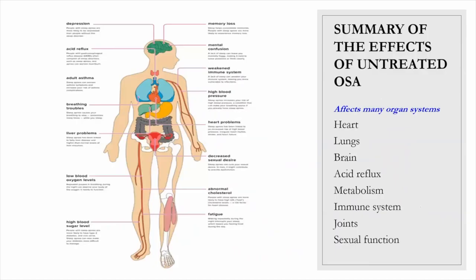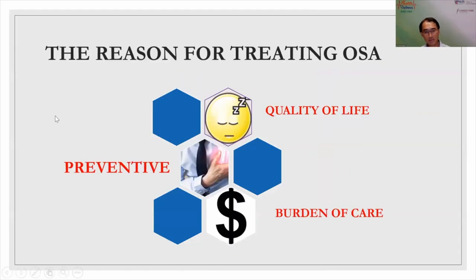All these are chronic diseases that cost money and time to treat. The whole idea is to detect OSA early to prevent reaching a stage where you need to spend significant time and money on these diseases. OSA can affect almost every single organ in the body, and picking it up early improves quality of life and reduces the burden of care on society.